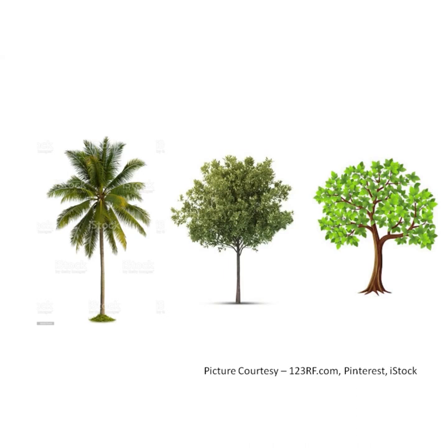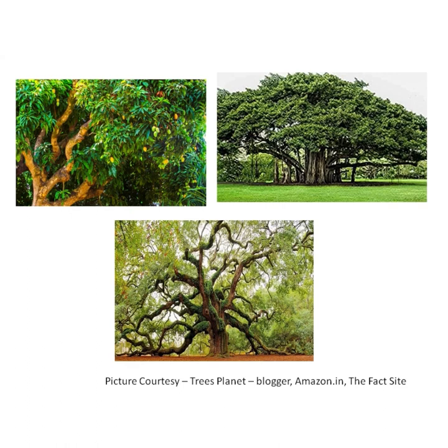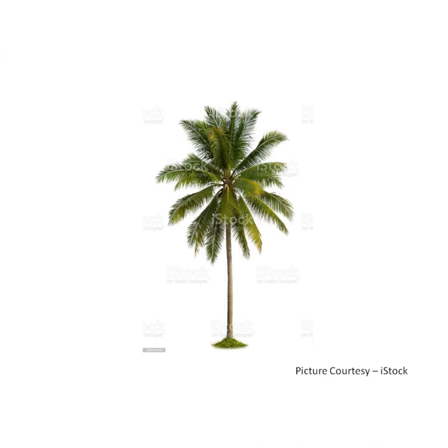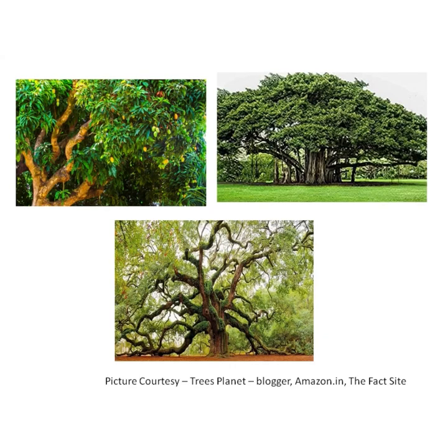Trees are big and tall plants. They have very thick, woody, and hard stems called the trunk. The trunk has many branches, and these branches bear leaves, flowers, and fruits. Some trees are branchless, like the coconut tree — it has only one main stem which bears leaves, flowers, and fruits all by itself. Trees live for several years. Banyan, mango, neem, cashew, teak, and oak are examples of trees.